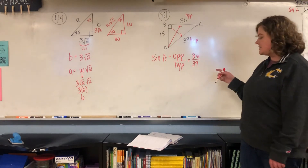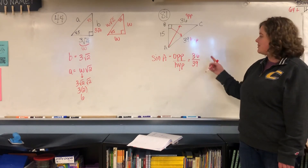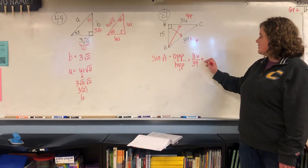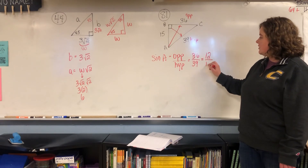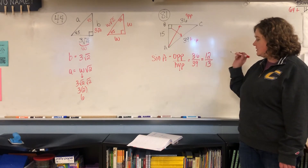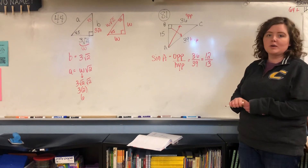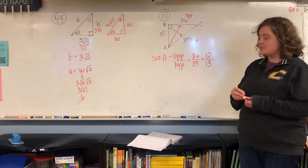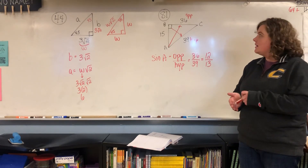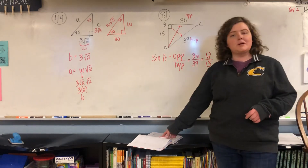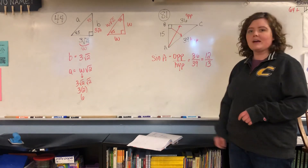That can simplify down because they're both divisible by three, so if you simplify down you'll get 12 over 13. That's all you have to do for those problems — you're just setting up the fractions. I've got two more problems to show you, and then that should help you with the packet.